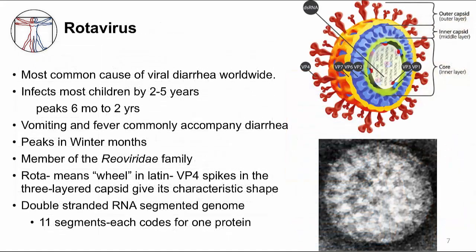Rotavirus is the most common cause of watery diarrhea worldwide, and almost everybody will be infected by age 2 and certainly by age 5. Rotavirus will begin causing symptoms when maternal antibodies wane at around 6 months of age. It's a messy infection — the commonly accompanying vomiting and fever make this infection even more miserable for the child and potentially dangerous. Dehydration is more likely to occur with the increased loss of fluids. Rotavirus infections peak in the winter months.